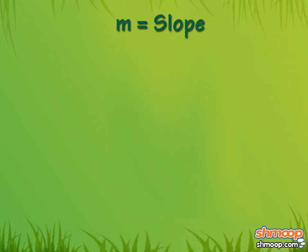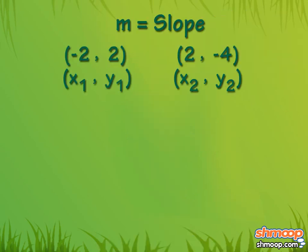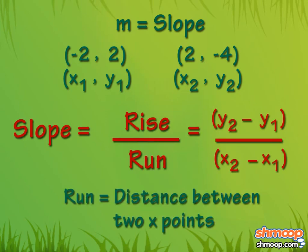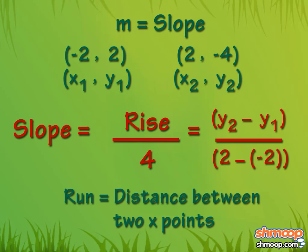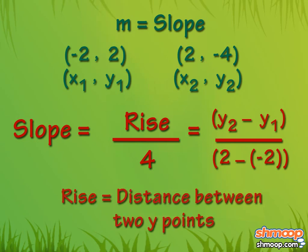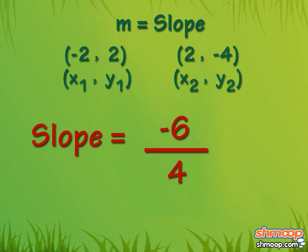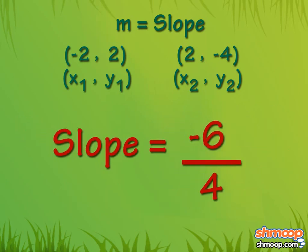Now we need to calculate m, or slope. We do this by finding the rise and run between the two points. The run, the distance between the two x-points, is 4, while the rise, the distance between the y-points, is negative 6. Slope equals rise over run, or negative 6 over 4. This simplifies to negative 3 over 2.